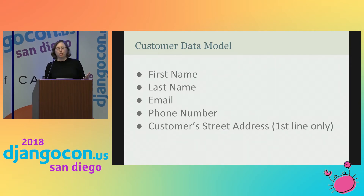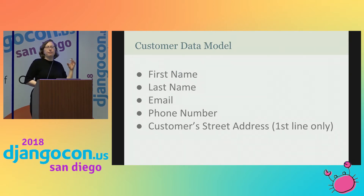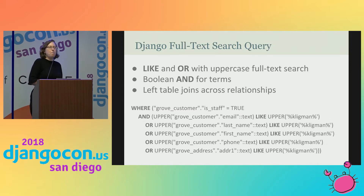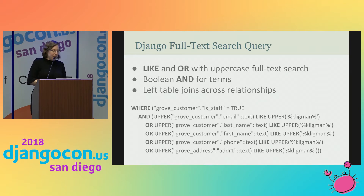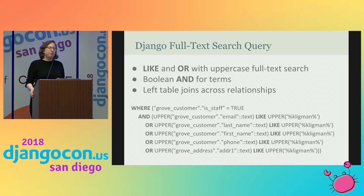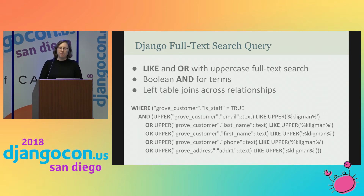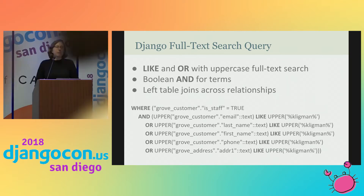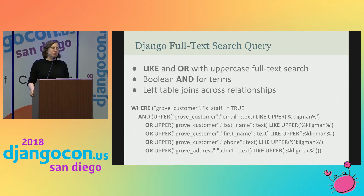This was our data model for search — simply a first name, last name, email address, phone number, and the first line of a customer's street address. But behind the scenes, Django would produce a query that would full-text search all of the fields, transform them, and then walk any relationships we had. When there were a few thousand records, this flew. A few hundred thousand records, it worked fine. A few million records, it still worked but would add a few seconds to the search. But as we expanded beyond that, the time to perform a search increased considerably.